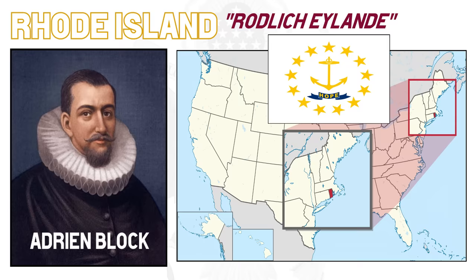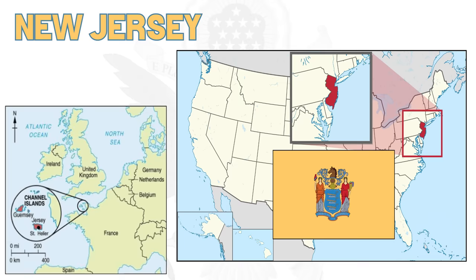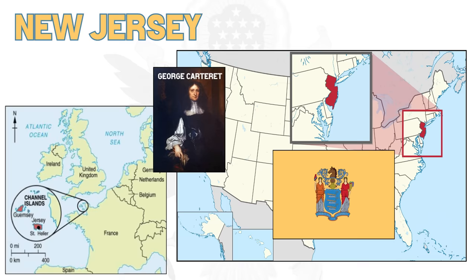Connecticut is once again of native origin. Kinnitukut was an Eastern Algonquin word which meant 'land on the long tidal river.' New Jersey follows New Hampshire's example and is named after Jersey, the largest of the British Channel Islands, and the birthplace of one of the colony's two co-founders, Sir George Carteret.